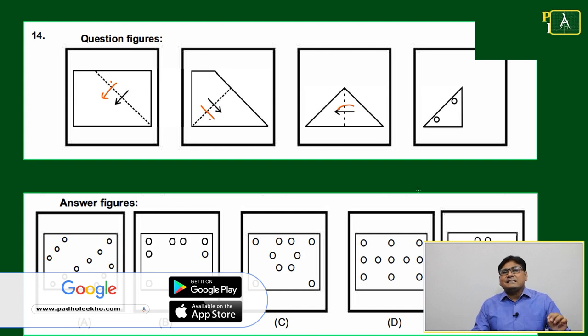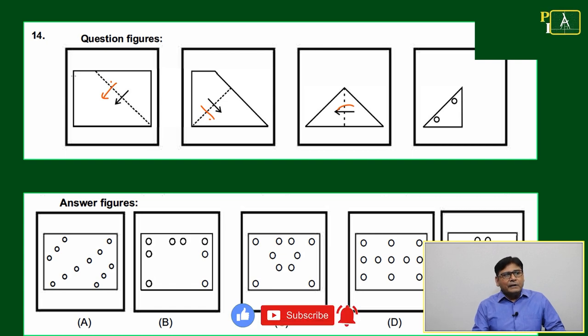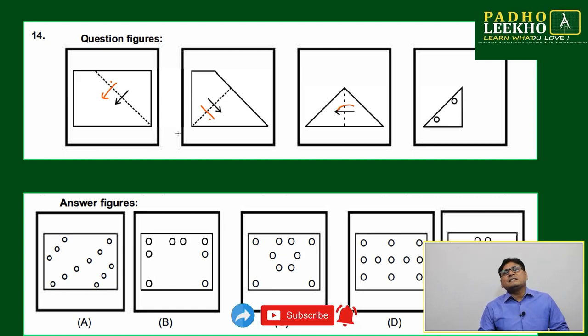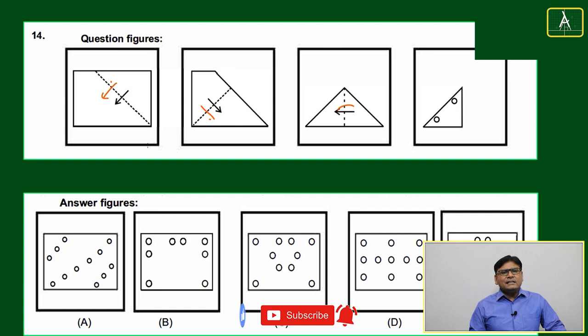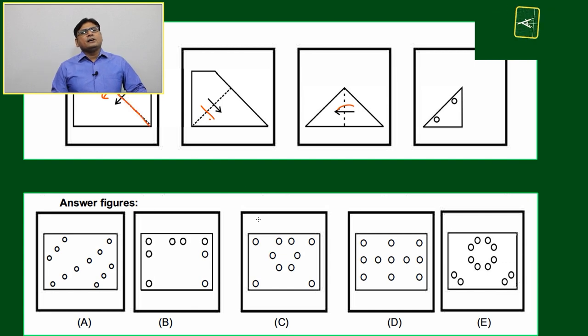It cannot be 16, it will be less than 16 because it is not happening in symmetry. If it would happen in symmetry then exactly it would be 16 holes. Now the only thing we have to do is stretch our imagination. If anywhere you are putting this line in any of the options, which option is giving you symmetry?